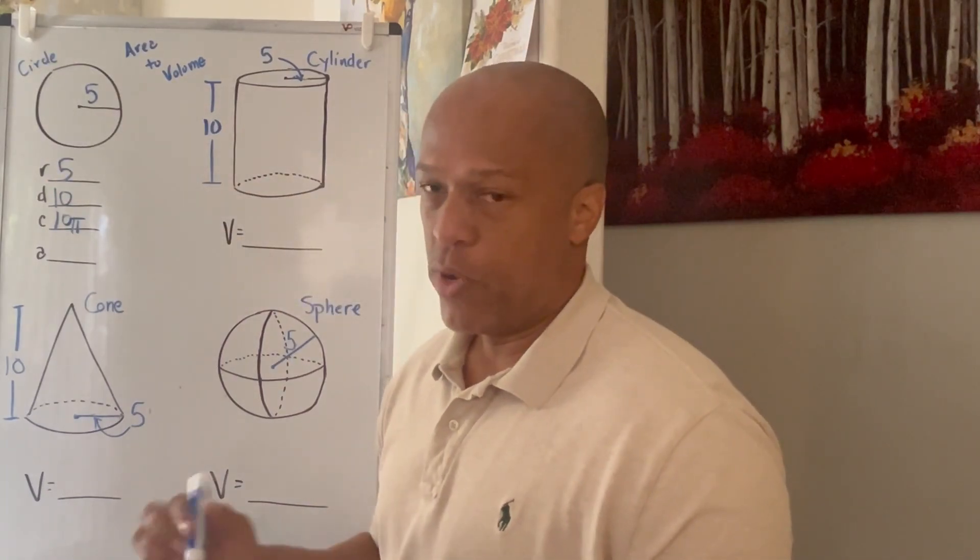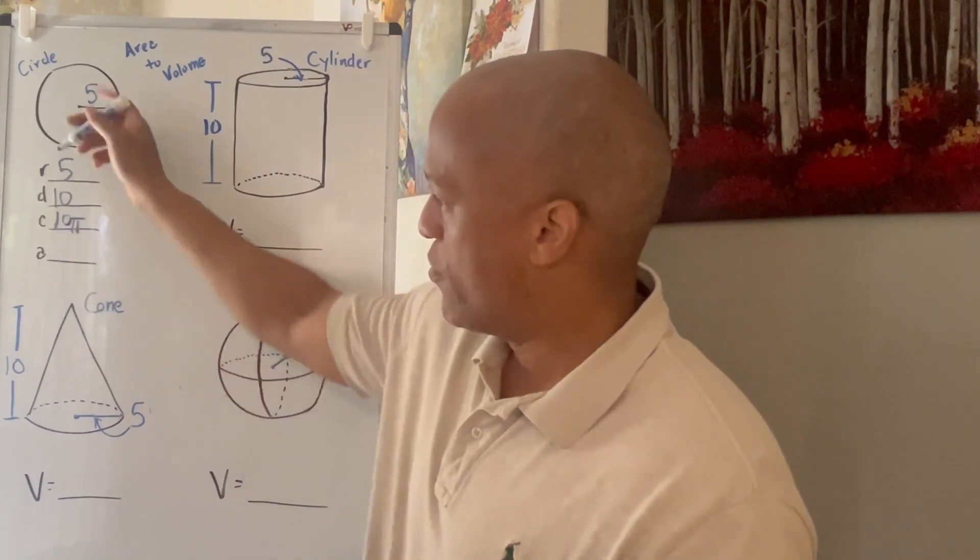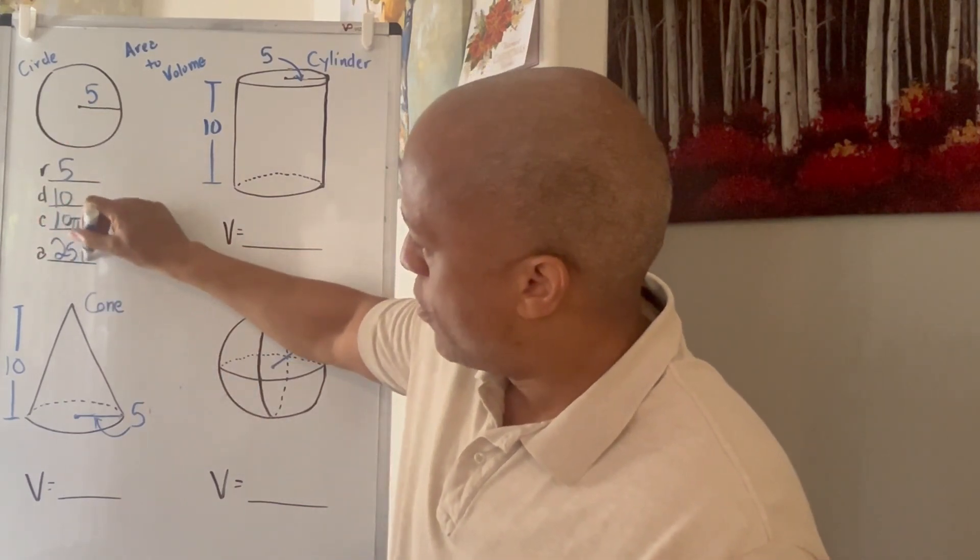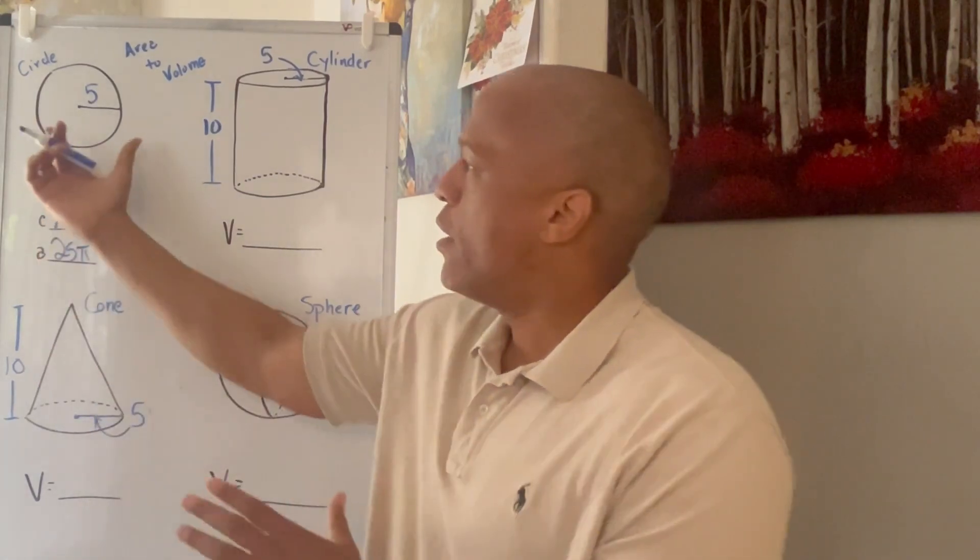Every time we think of area, we want to think of base times height. In this case, the base and the height are the same. They're both the radius. 5 times 5 is 25 pi and that's our area for the circle. So now once I have that area for the circle, let's look at how it relates to the cylinder, the volume of a cylinder.